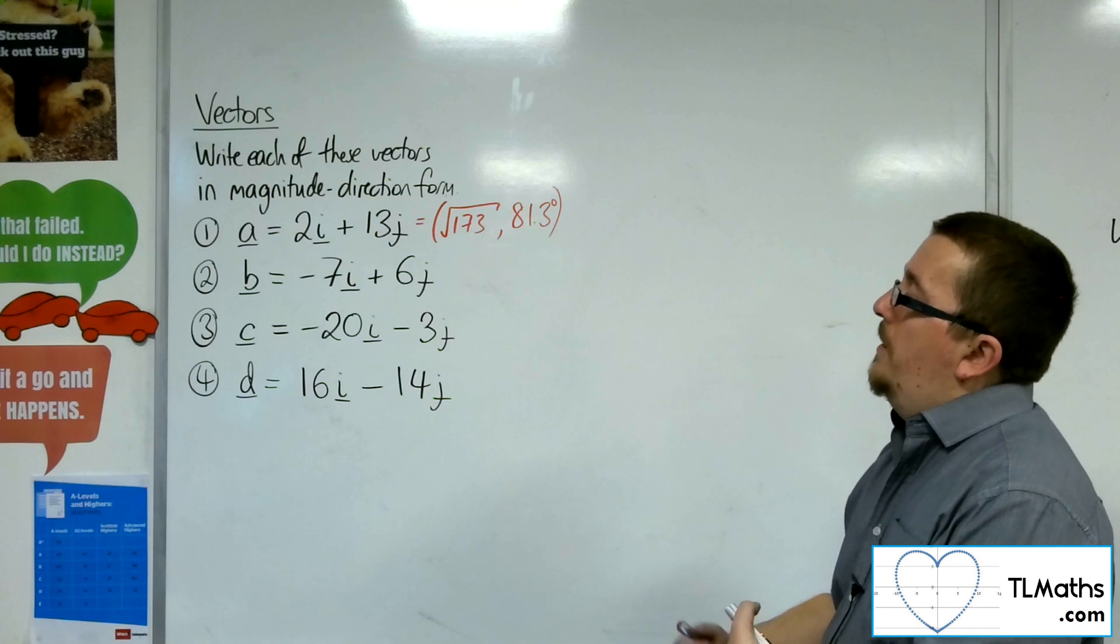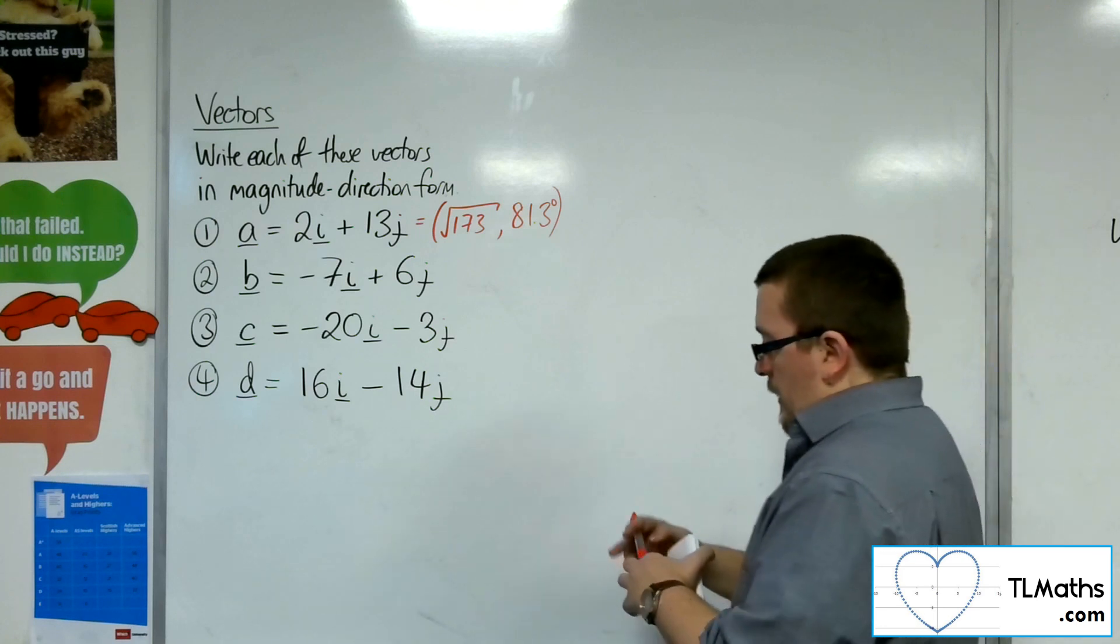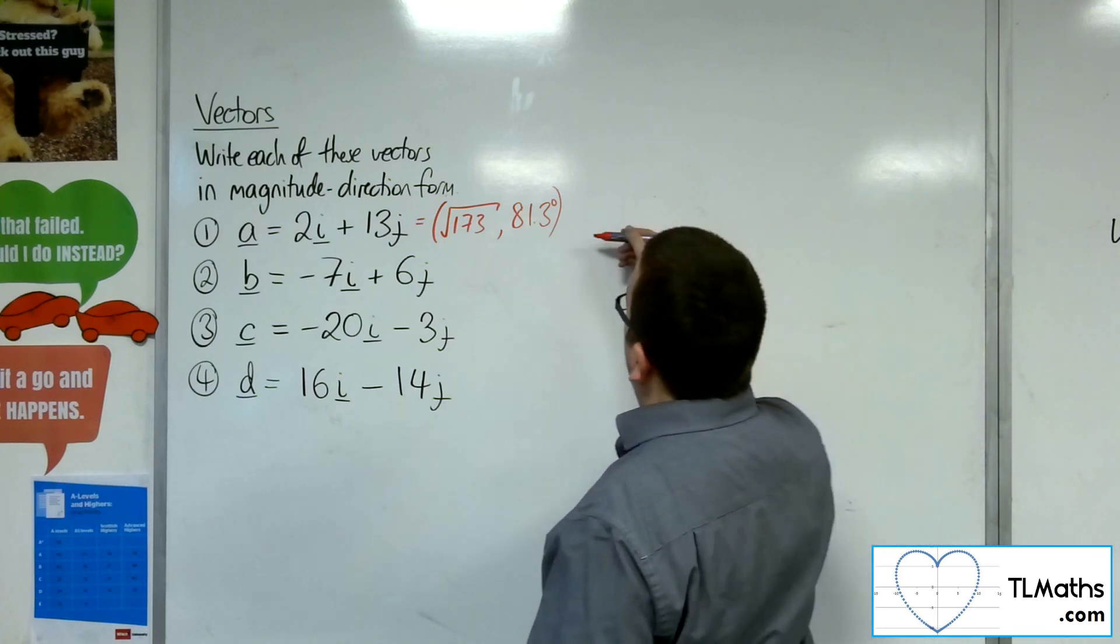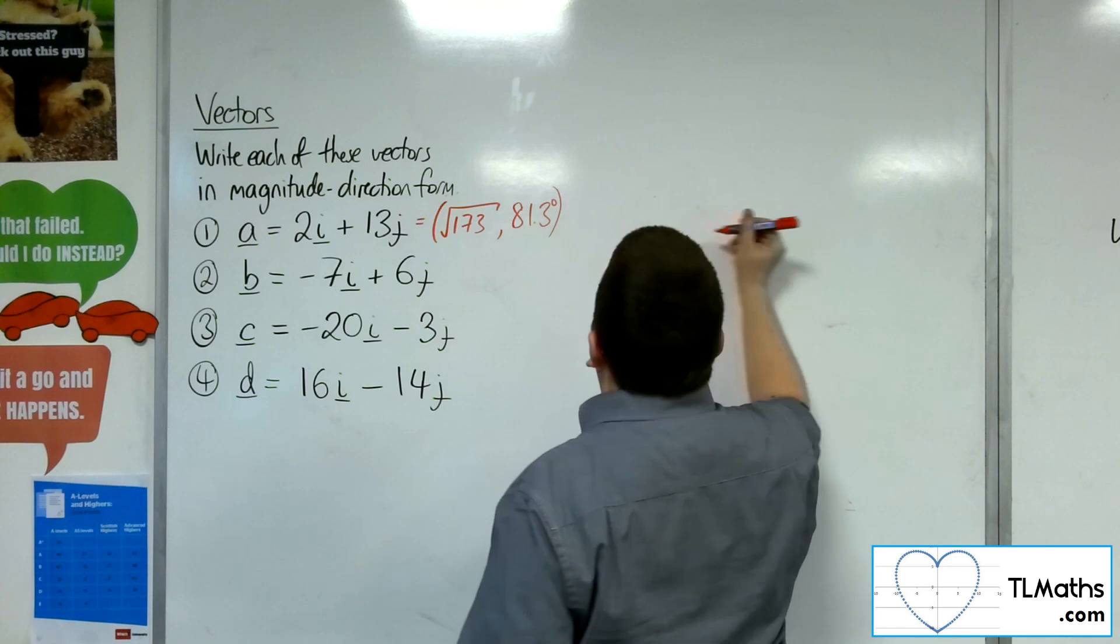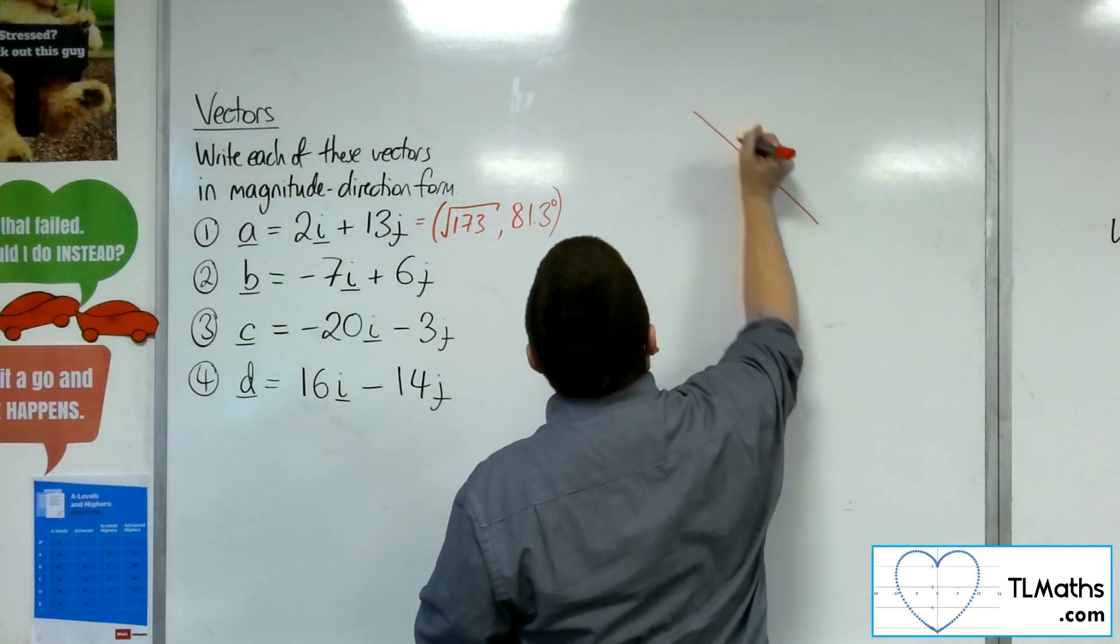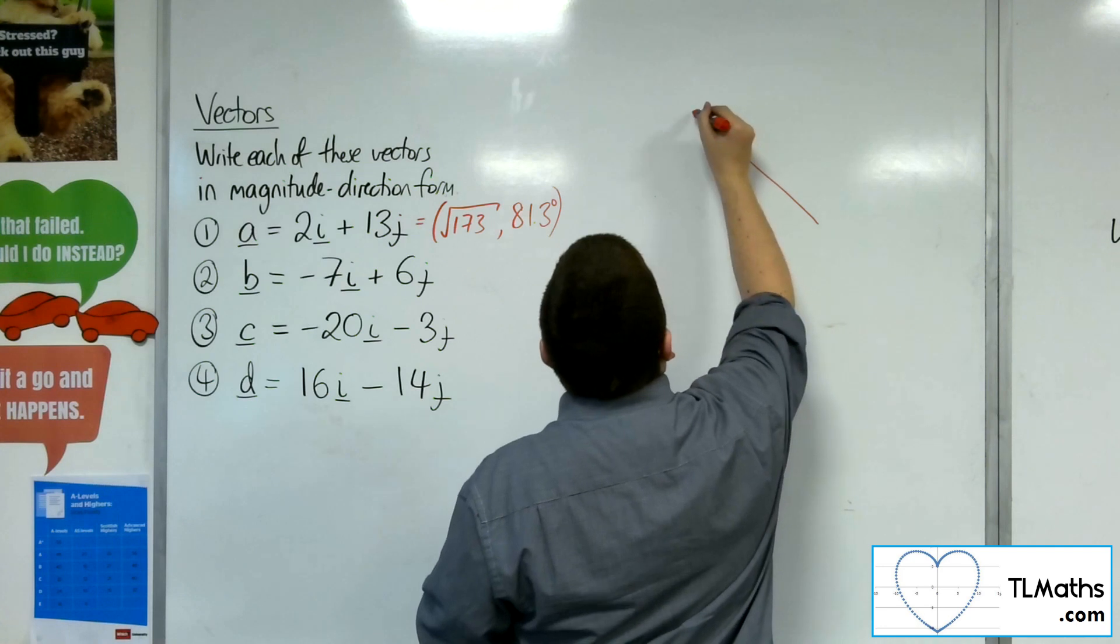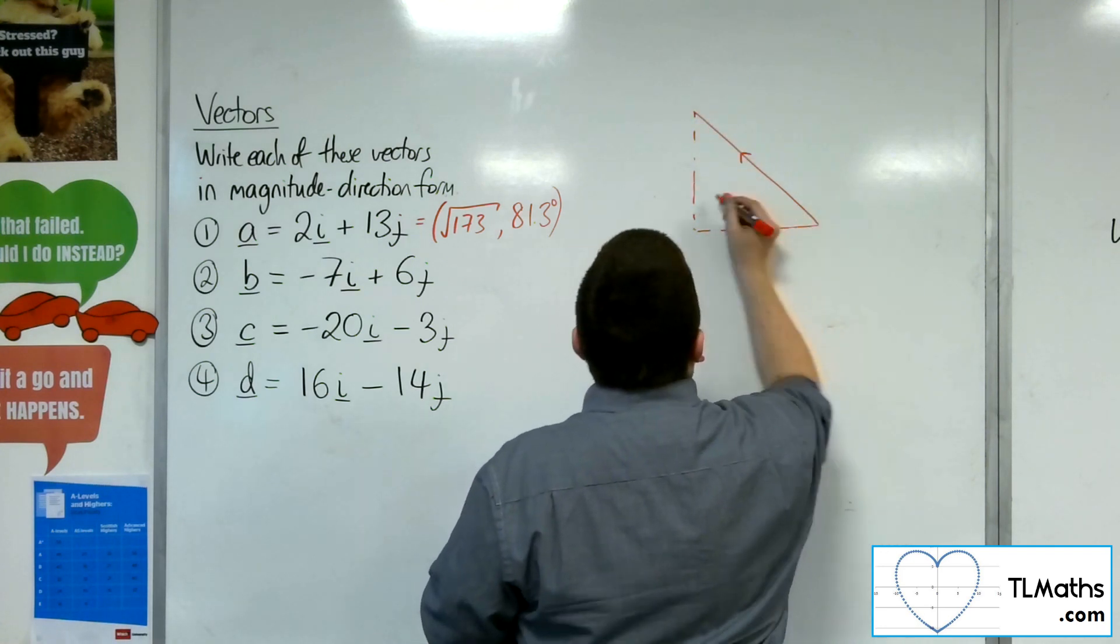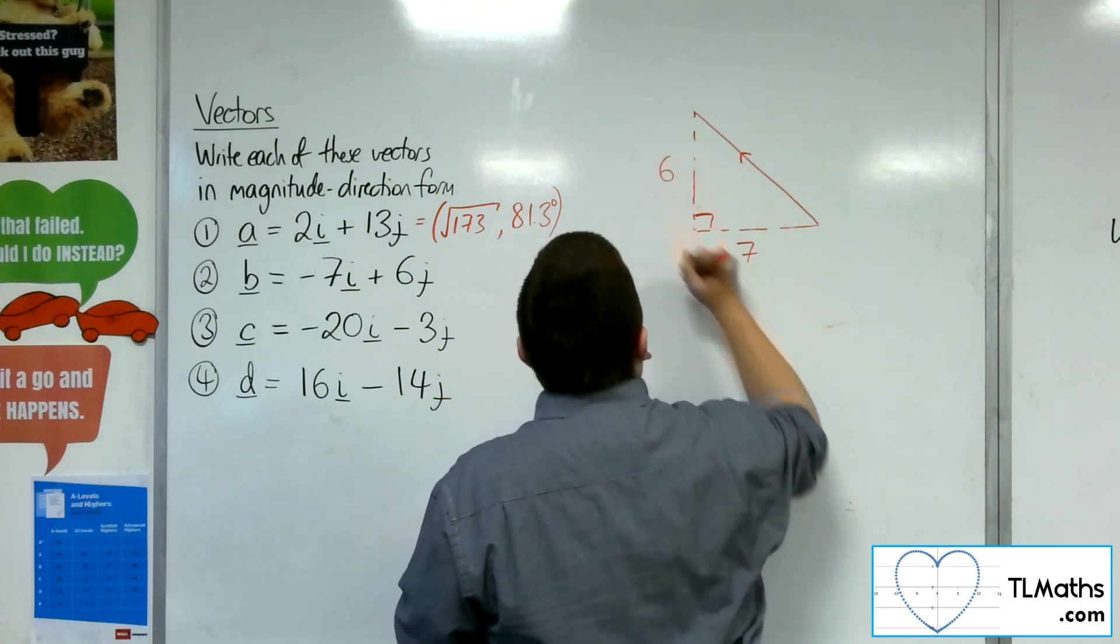So b equals minus 7i plus 6j. So minus 7i, so we're going back minus 7, up 6. So something like this, draw a right-angled triangle. So we've got 7 and 6.